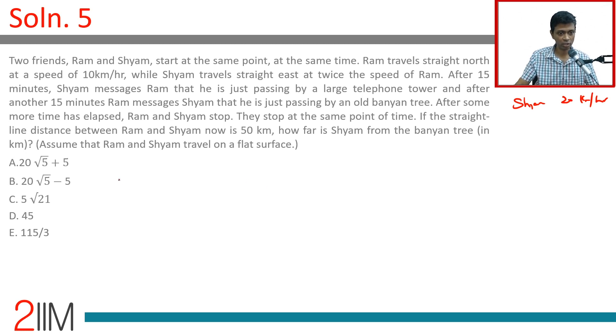First, I am going to locate the banyan tree and the telephone tower. After 15 minutes, Shyam passes the telephone tower. 15 minutes is one quarter of an hour, so Shyam would have traveled 5 kilometers.